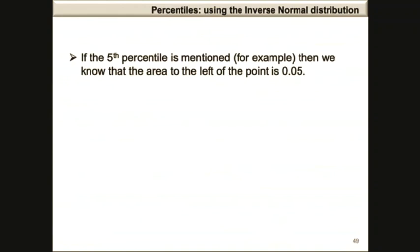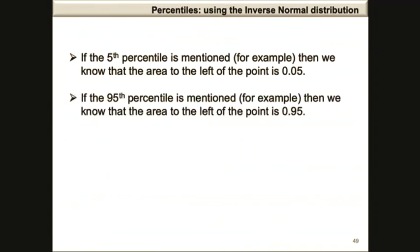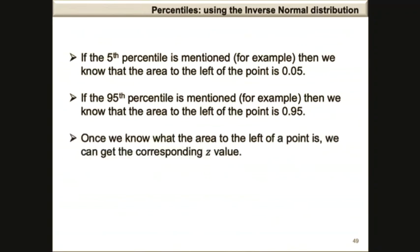If the 5th percentile is mentioned, for example, then we know that the area to the left of the point is 0.05. If the 95th percentile is mentioned, for example, then we know that the area to the left of the point is 0.95. Therefore, once we know what the area to the left of a point is, we can get the corresponding z-value.